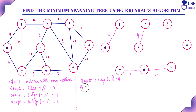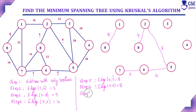Step 6: the next minimum cost edge is edge 6,8 with cost 12. We consider including it, but if we include this edge it will form a cycle, so we should not include it — we skip this edge.